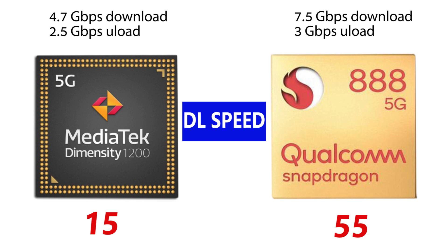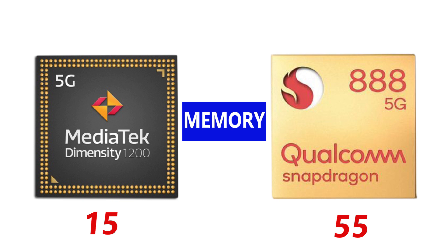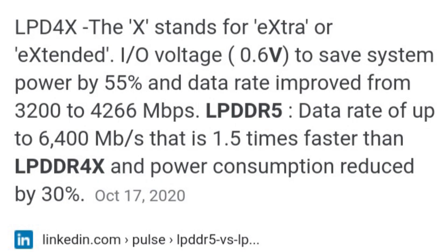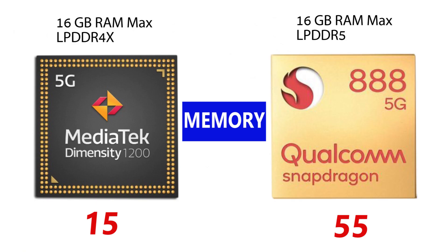At maximum, both chipsets support up to 16GB of RAM, but with different memory types. The Snapdragon's LPDDR5 RAM is one and a half times faster than the LPDDR4X found in the MediaTek Dimensity 1200.